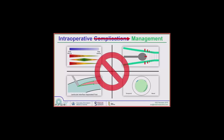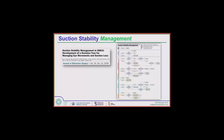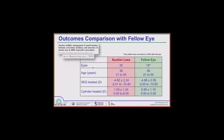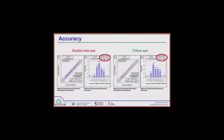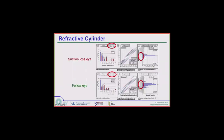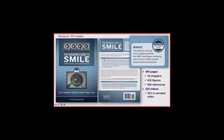Suction loss, which is thought to be the worst thing that could happen, we don't actually think of as a complication — we think of it as a management issue. We've developed and published an algorithm, and the outcomes show that the suction loss eye versus the fellow eye are identical. The patient leaves the operating room the same day with treatment completed. There is no change in outcome.